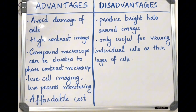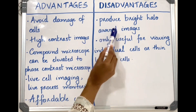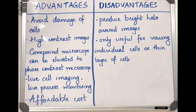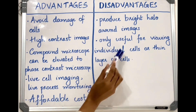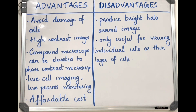The disadvantage is that the phase contrast microscope produces a bright halo around images. This is because of incomplete separation of the direct unretarded rays and the deviated retarded rays. Another disadvantage is that it is only useful for viewing individual cells or thin layers of cells.